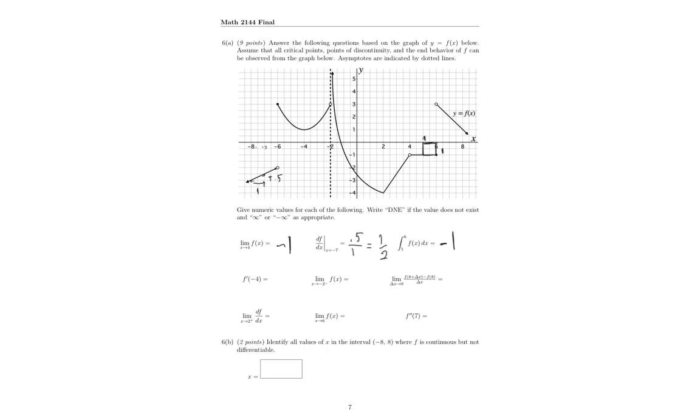So F prime at negative 4, well, at negative 4, what is our slope? Well, that looks like a critical point, a minimum or a max, or specifically a minimum. Notice how, from the left, I'm going down. My slope's negative. To the right, it's positive. That means it must be a changing sign there. So that means our slope is 0 right there.